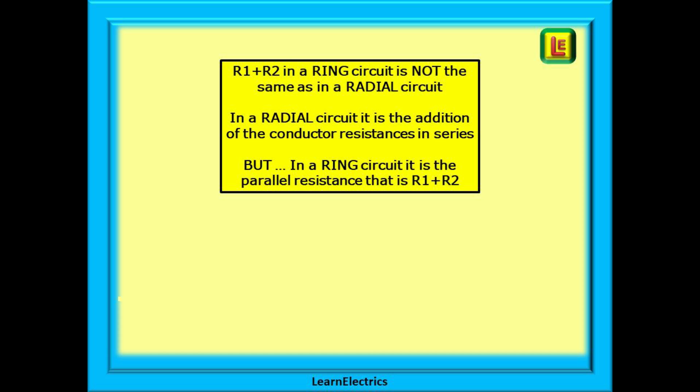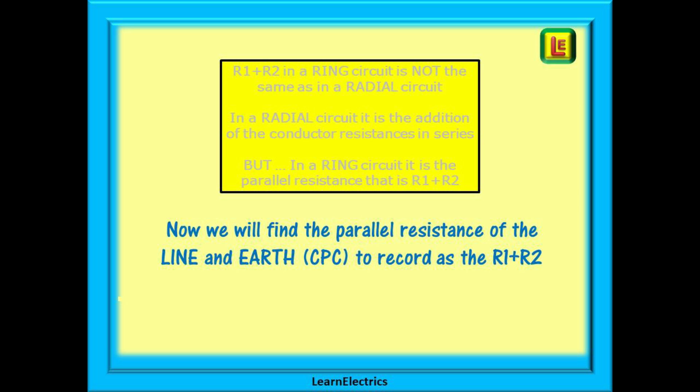But first, some essential basics. R1 plus R2 in a ring circuit is not the same as R1 plus R2 in a radial circuit. In a radial circuit it is the addition of the conductor resistances in series, but in a ring circuit it is the parallel resistance that is R1 plus R2 and these are very different. Let's move on and find the parallel resistance of the line and earth or CPC to record as R1 plus R2.